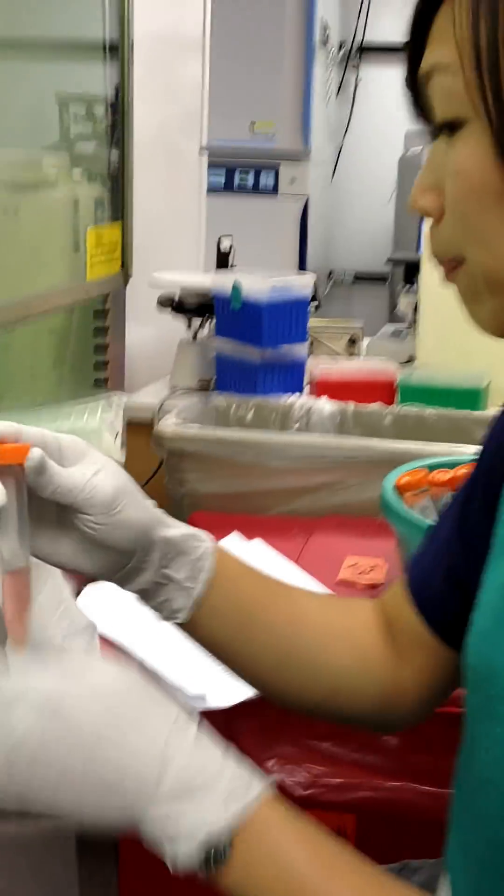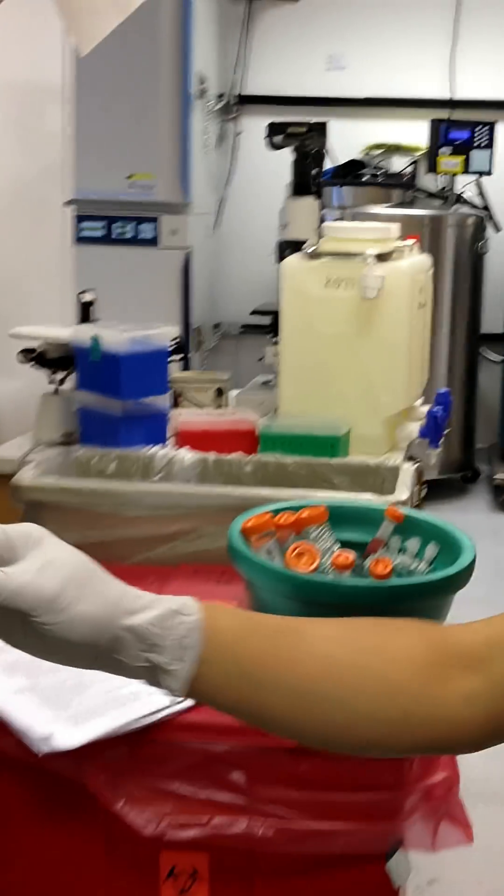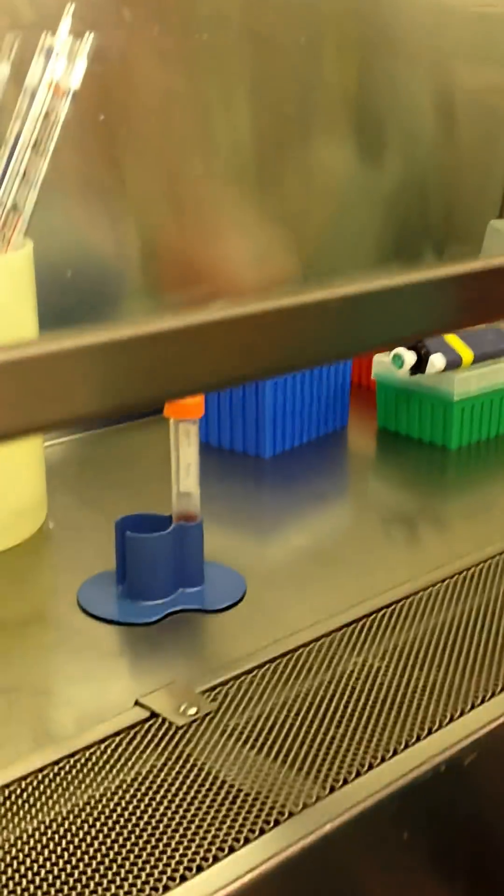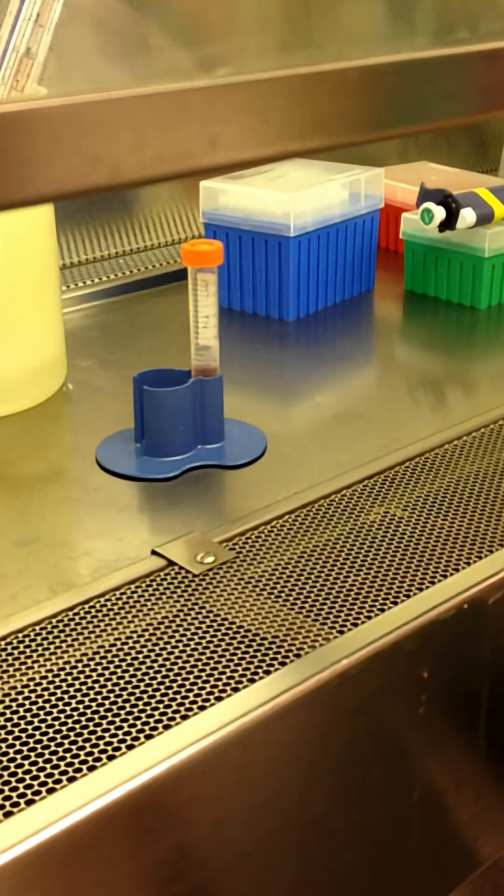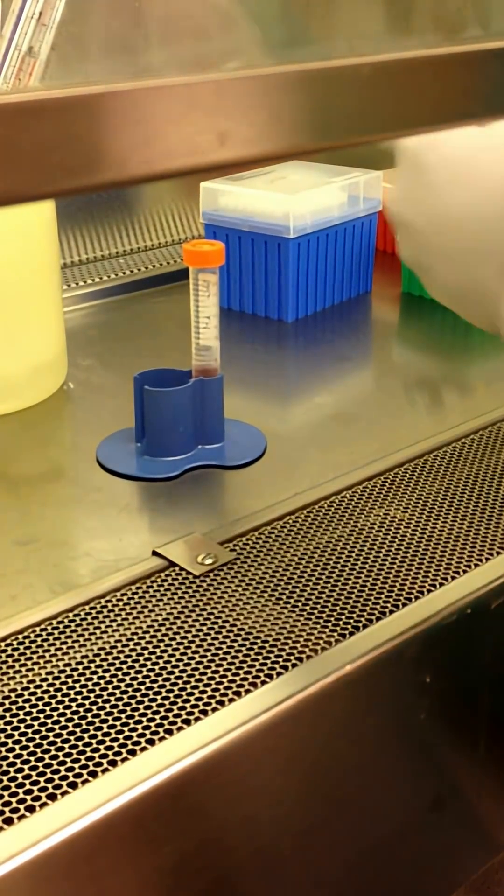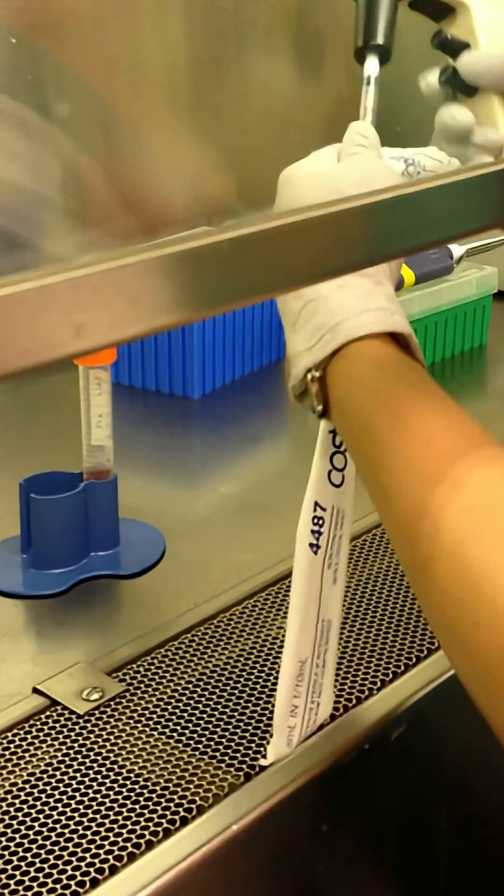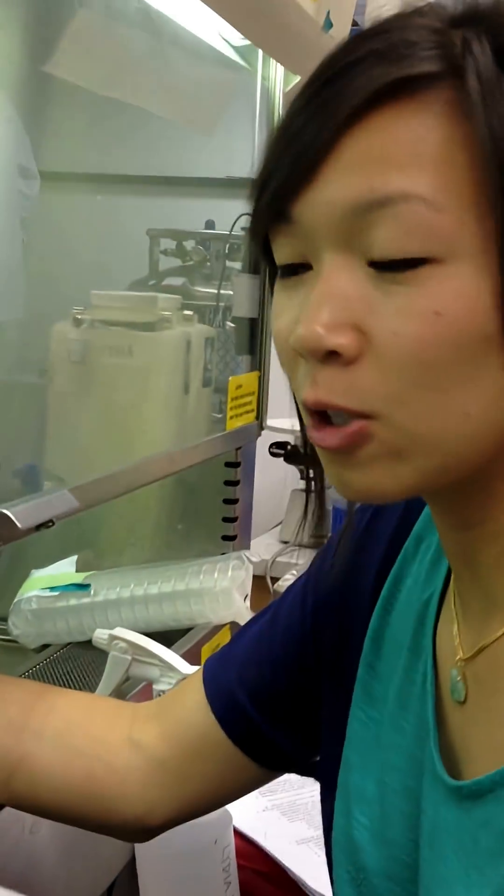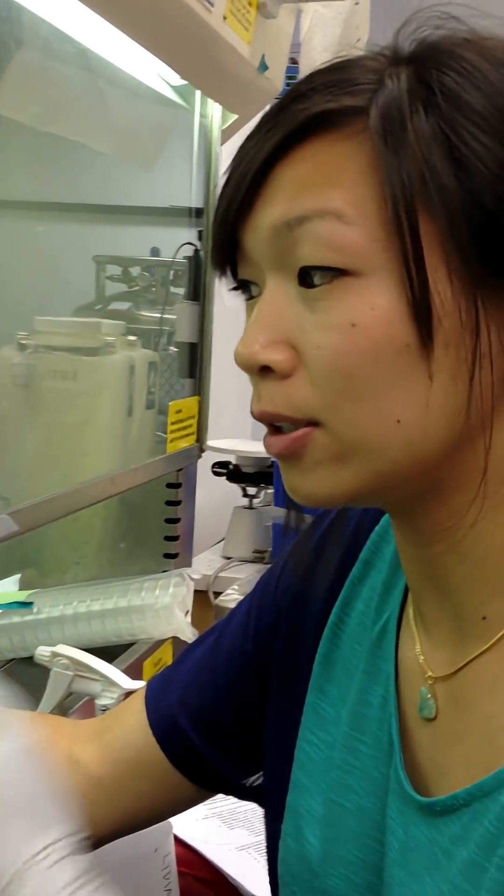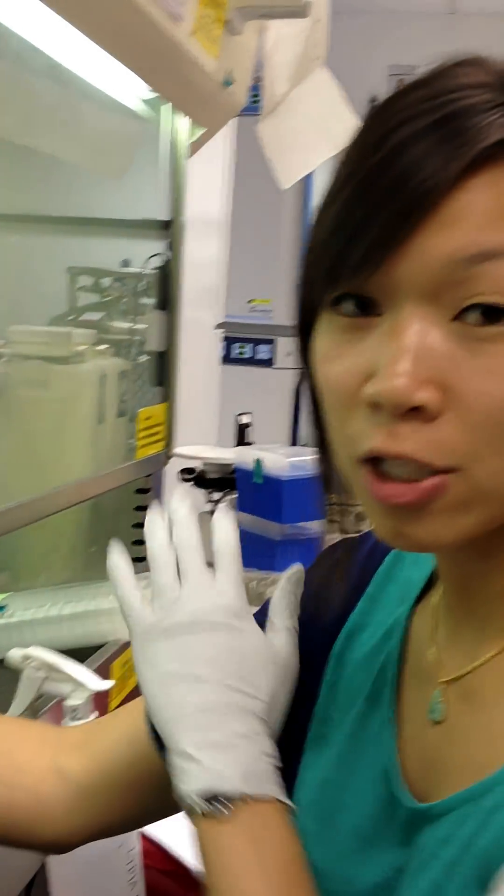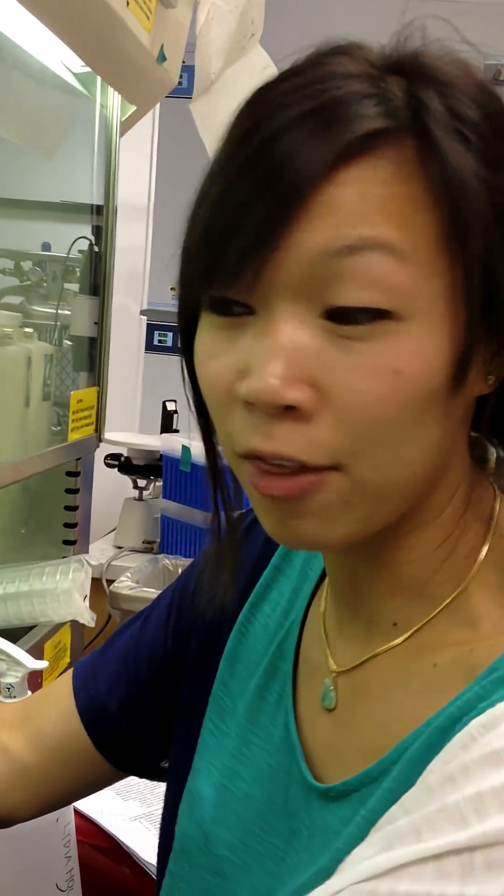What we're going to do is first resuspend this up and down a few times, exactly ten times. We want to be kind of gentle because you don't want the cells to die, so you're going to do it up and down slowly. Also make sure that the hood has been sprayed down with ethanol.